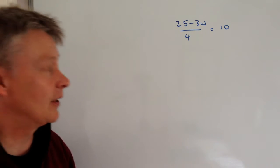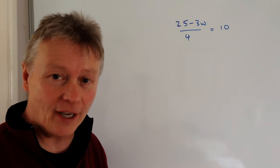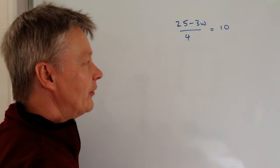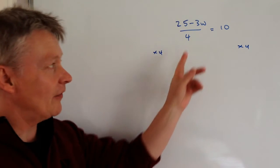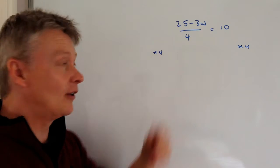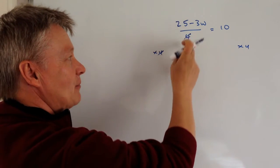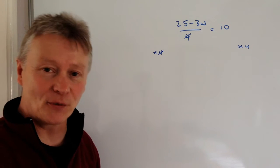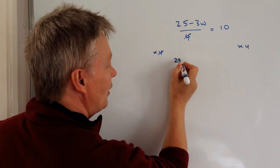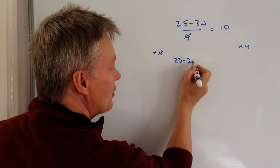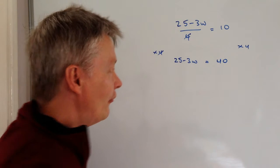This particular one, we've got a denominator of 4, and we're going to be asked to find the value of W. So what I'm going to do is multiply both sides by 4, because if I do that, this denominator of 4 gets cancelled out — effectively I've got 4 times that divided by 4, so one cancels the other out. And on the left-hand side I end up with 25 minus 3W equals 10 times 4, which is 40.